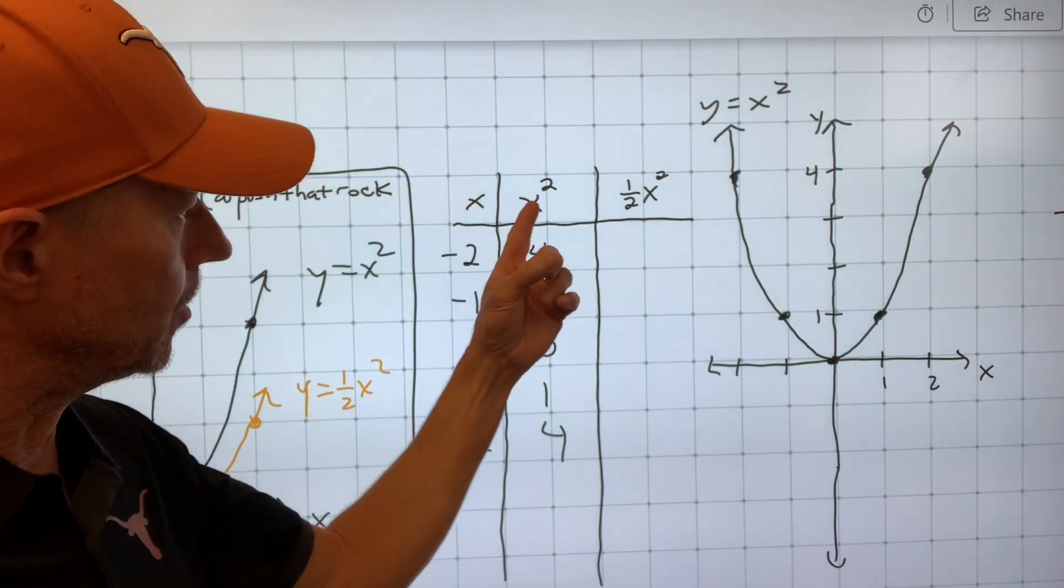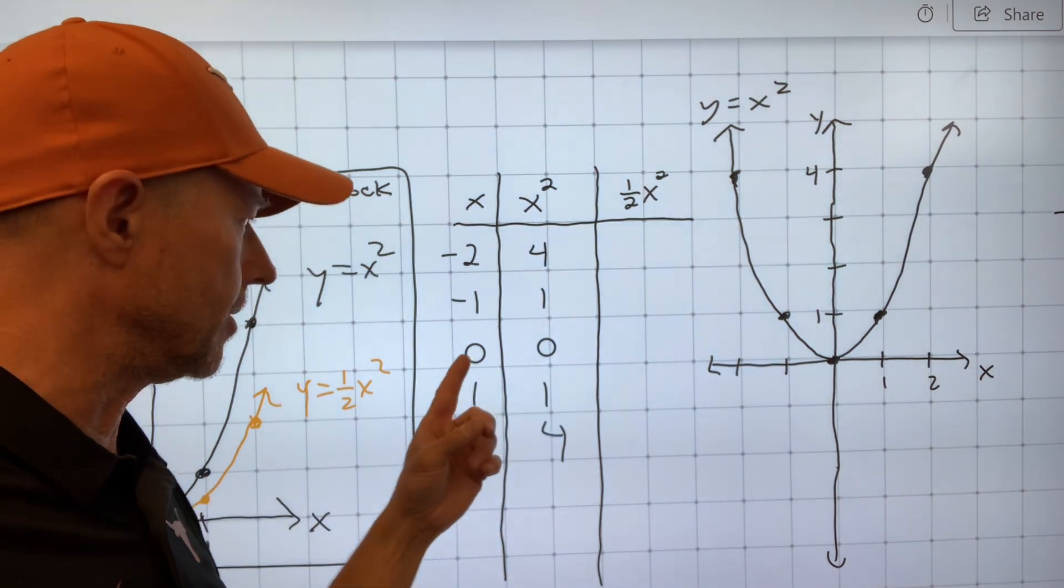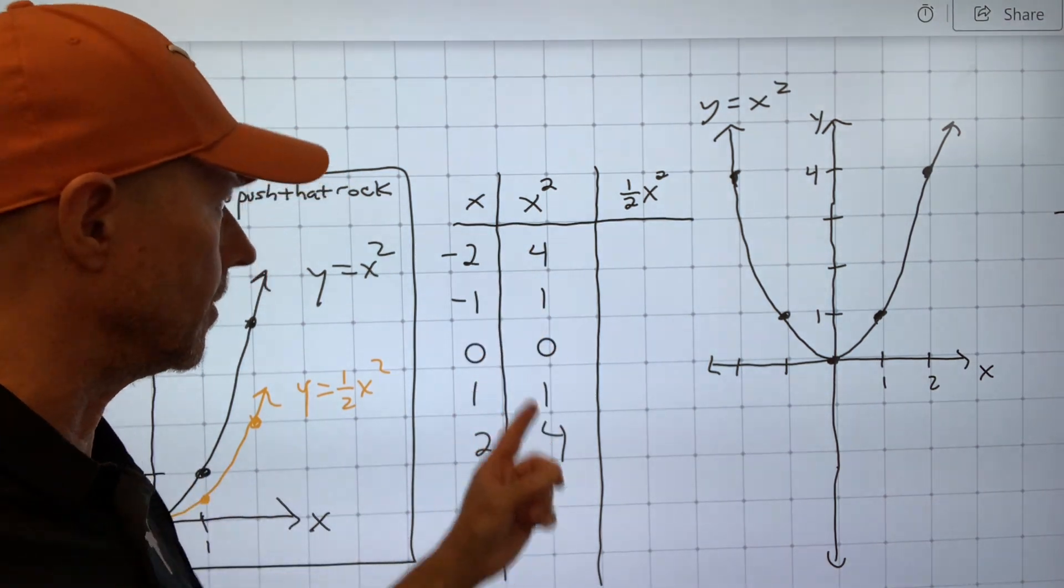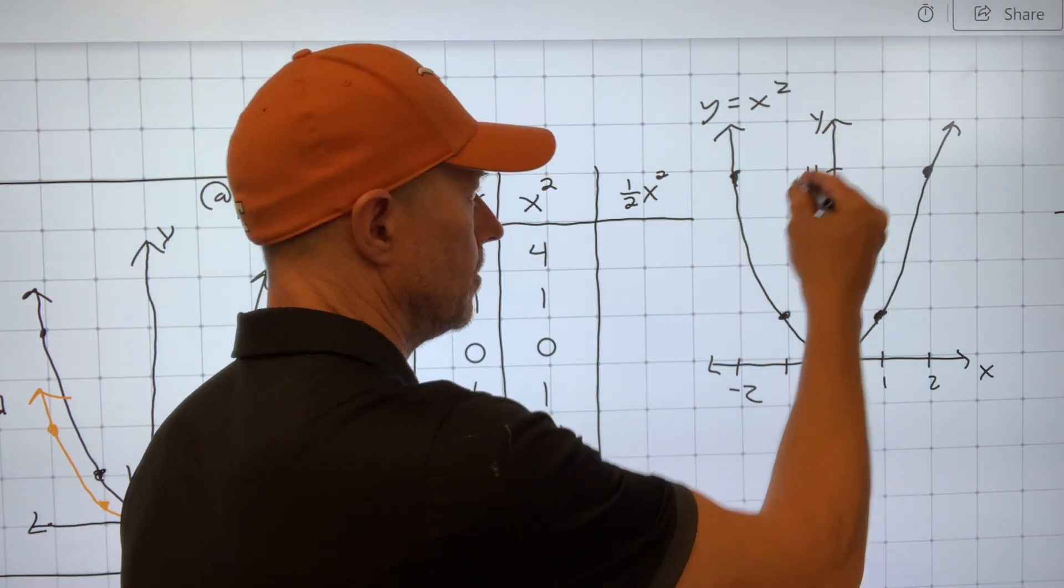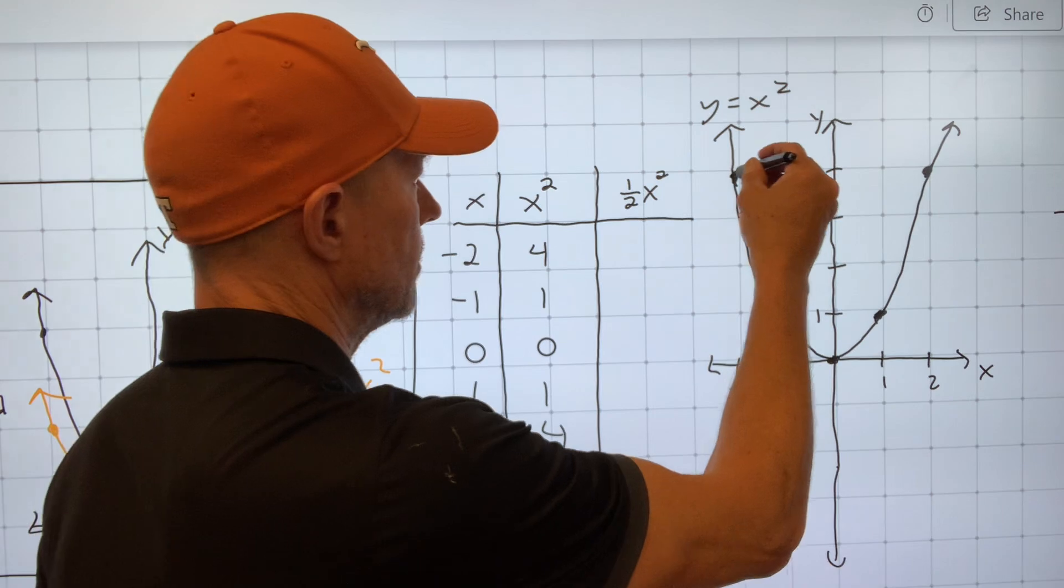We know that if I put negative 2 in and square it, I get positive 4, and 0 squared is 0, and 2 squared is 4, and so I get this curve here going through the point negative 2, positive 4, so it goes to this point here.